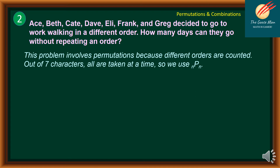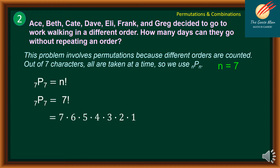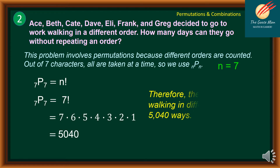We have nPn, where n is equal to 7, so we use 7P7, which equals n factorial. Substituting, 7 factorial can be expanded as 7 times 6 times 5 times 4 times 3 times 2 times 1, giving us 5,040. Therefore, they can go walking in a different order in 5,040 ways.